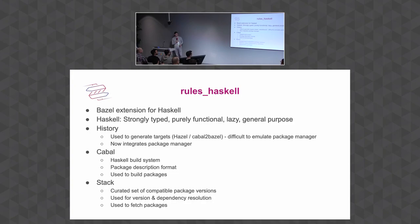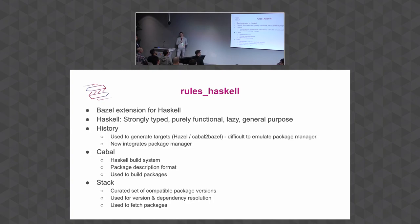Let me introduce Rules-Haskell. At Twig, we developed Rules-Haskell as a Bazel extension for Haskell — a strongly typed, purely functional, lazily evaluated, general-purpose programming language. Historically, we used the second approach: we parsed the package definitions for Haskell dependencies and generated regular Rules-Haskell library and binary targets. But we found it is very difficult to emulate all the things the package manager does, especially when it comes to supporting Linux, macOS, and Windows simultaneously.